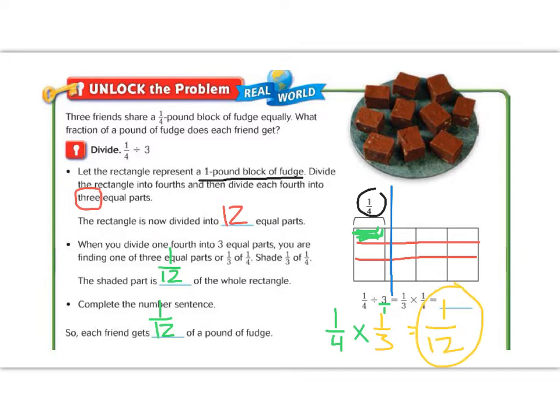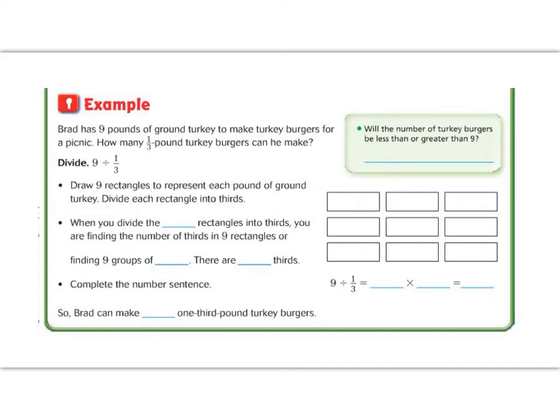Let's try the second example on this page on my next slide. Example two, Brad has nine pounds of ground turkey. He wants to make turkey burgers for a picnic. How many one-third turkey burgers can he make? So we're going to be dividing nine divided by one-third, because I have nine whole things, and I'm going to split each thing into groups of three. Let's read the green box to give us some information. It says, will the number of turkey burgers be less than or greater than nine? Well, if I have nine whole things, if I split them into pieces, then I'm going to have more than nine, because each group of nine I now split, so it's going to be greater than nine.